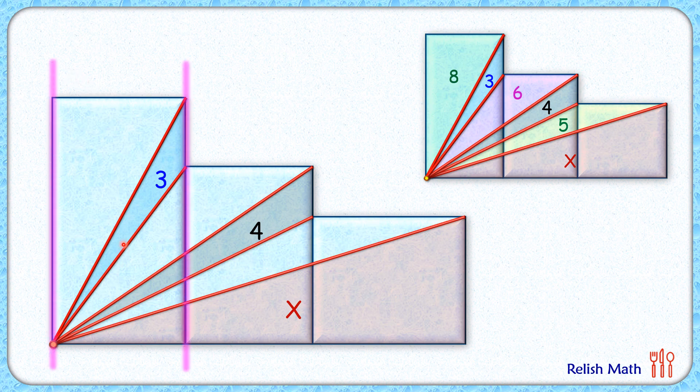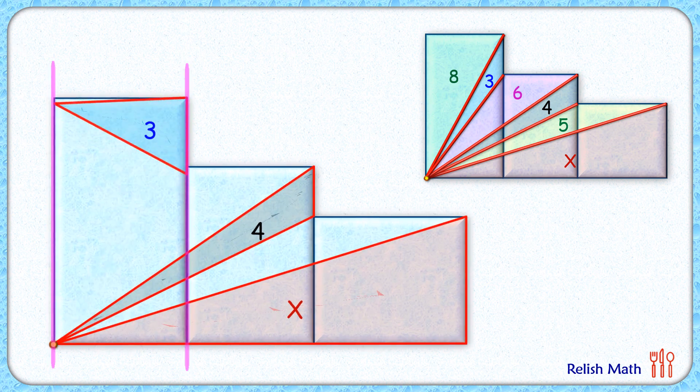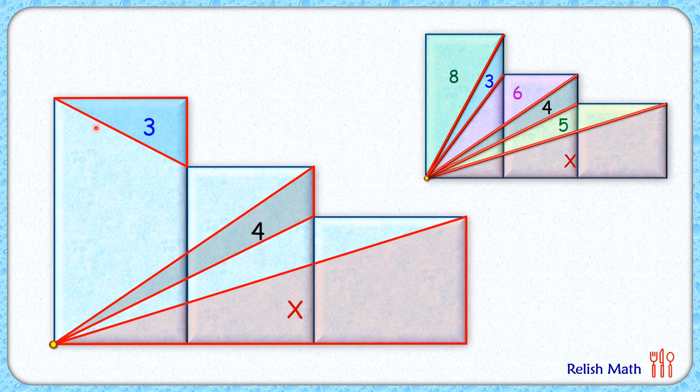Now for this blue triangle, we'll keep the base the same and just shift the vertex. For the blue triangle, the base will remain constant and the height will also remain constant. So any triangle formed keeping the base the same and moving the vertex along this parallel line will have the same area. Let's move the vertex of this blue triangle from this point to this point. The area of this blue triangle will remain the same, that is three centimeters square.